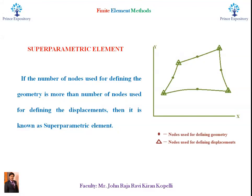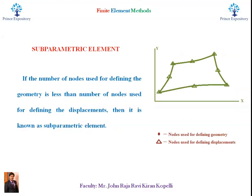If the number of nodes used for defining the geometry is less than the number of nodes used for defining the displacements, then it is known as subparametric elements.